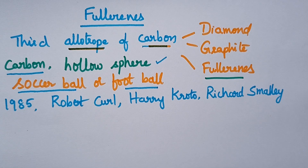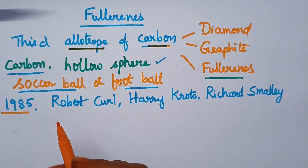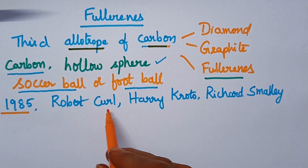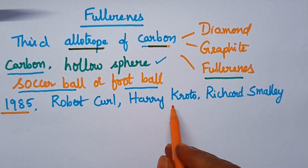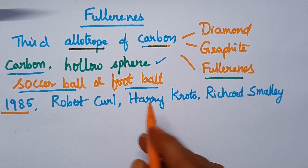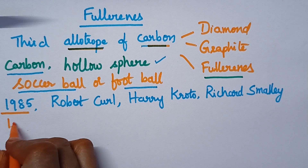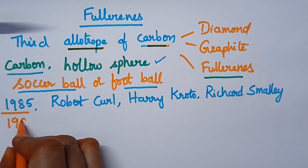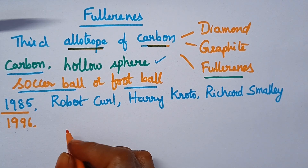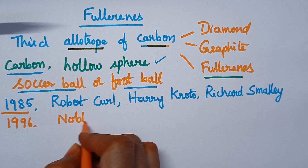Coming to the discovery of these fullerenes, in the year 1985, three scientists — namely Robert Curl, Harry Kroto, and Richard Smalley — discovered fullerenes. For their work, in the year 1996, they received the Nobel Prize.